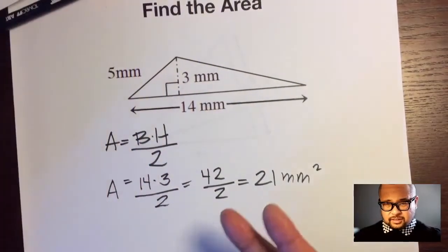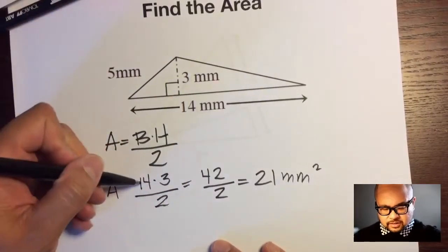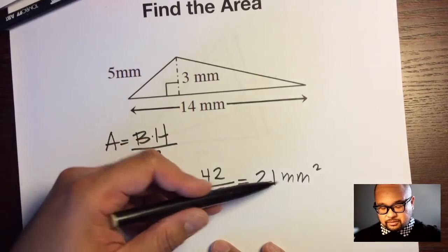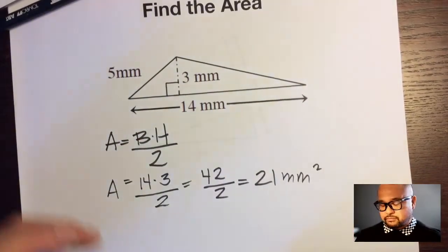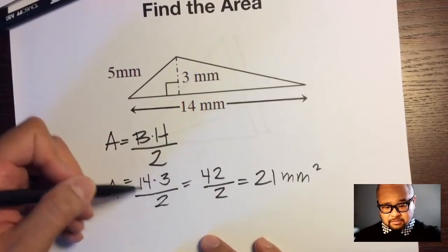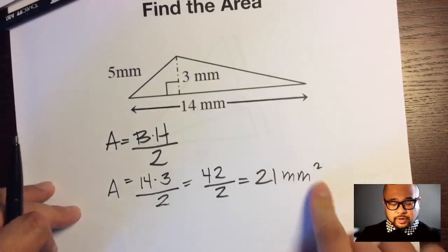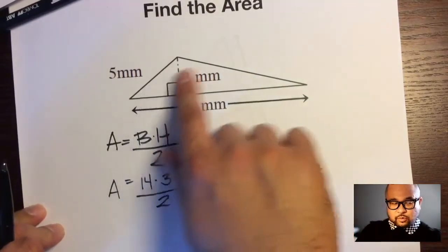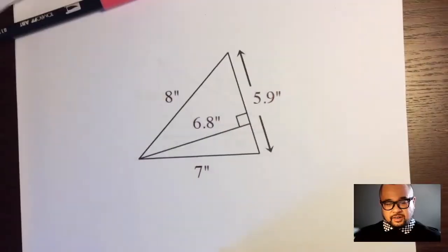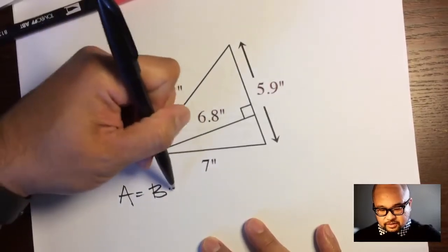Another way to do it: 14 divided by 2 is 7, and 7 times 3 is 21 millimeters squared — same answer. I personally like dividing first to make the numbers smaller, then multiplying. Don't forget the squared unit, because there are 21 squares that fit inside this triangle.